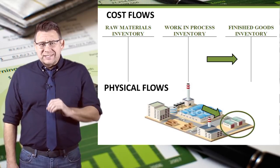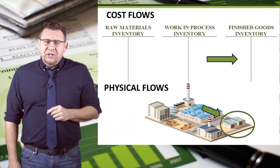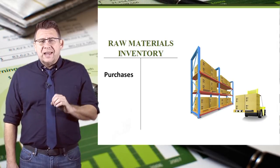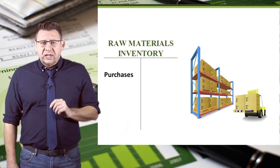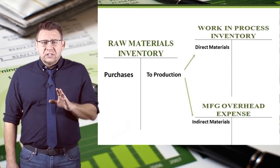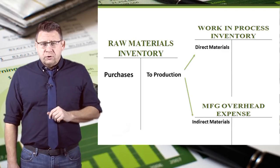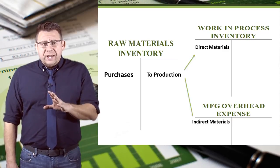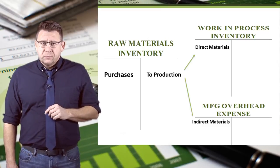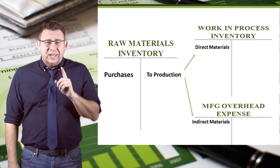Now let's look at materials specifically. When raw materials are purchased by a manufacturer, they are recorded as a debit in the raw material inventory account and physically stored in a raw materials warehouse. When materials are requisitioned for production, they physically move from the raw material warehouse to the production floor. In accounting, we credit raw material inventory and debit work in process for the direct materials. Raw materials are credited and manufacturing overhead expense is debited for the indirect materials.